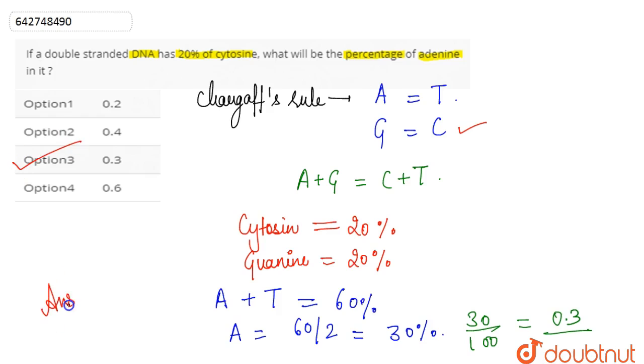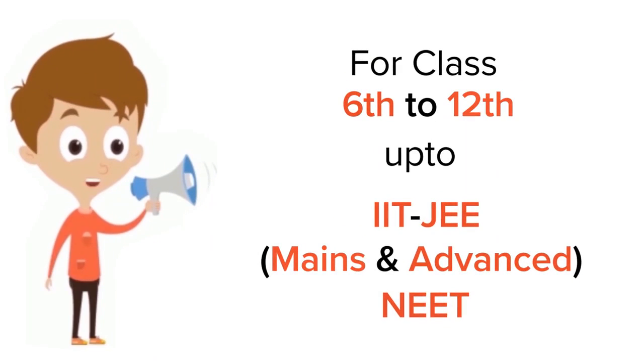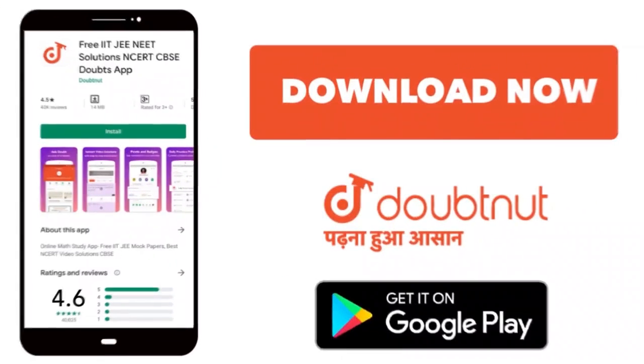For class 6-12, IIT-JEE and NEET level, trusted by more than 5 crore students. Download Doubtnet app today.